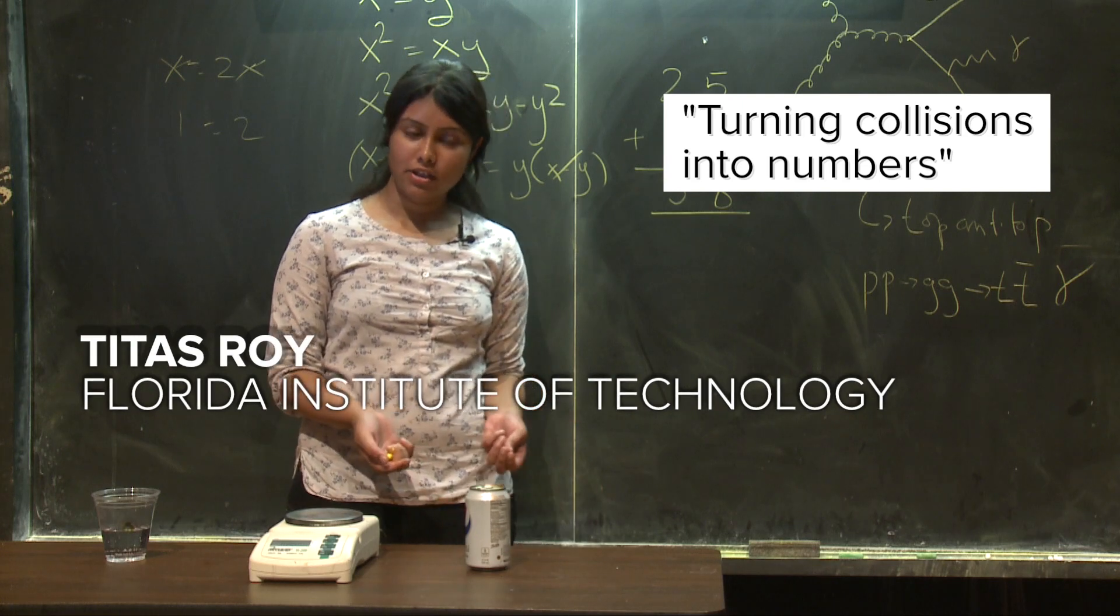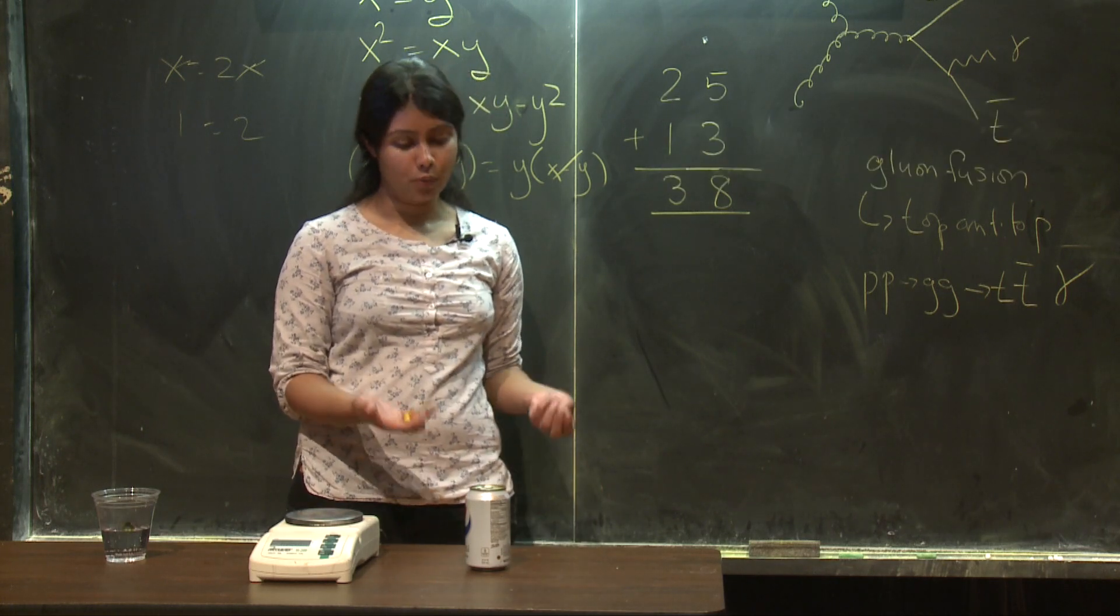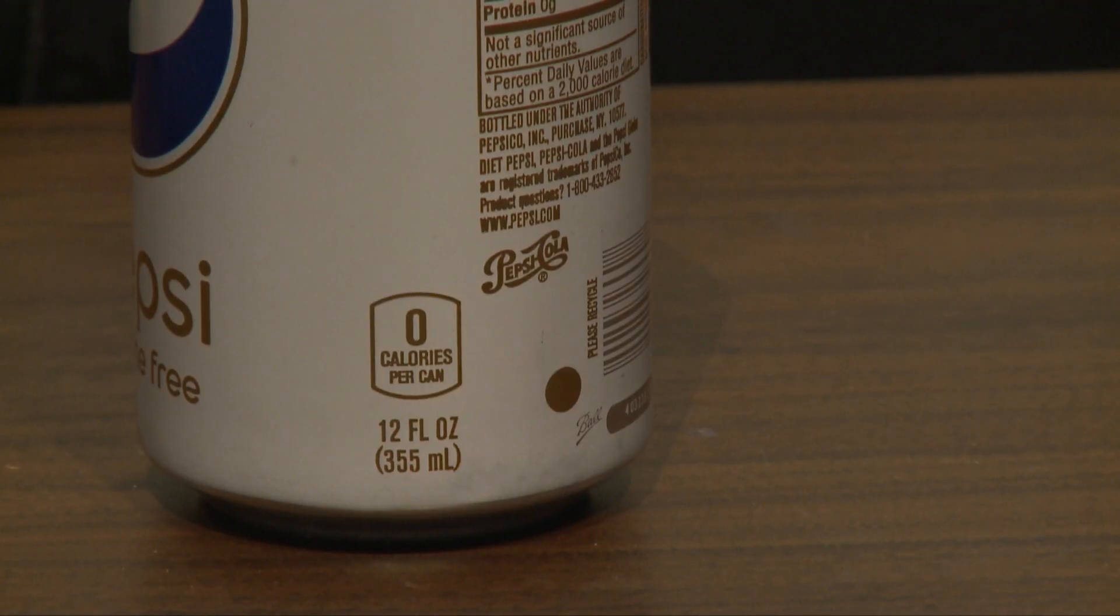For example, I have this can of soda and I know exactly how much it weighs. It weighs 12 ounces because it says so on the box.